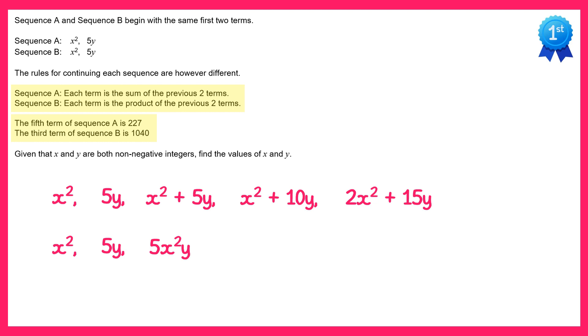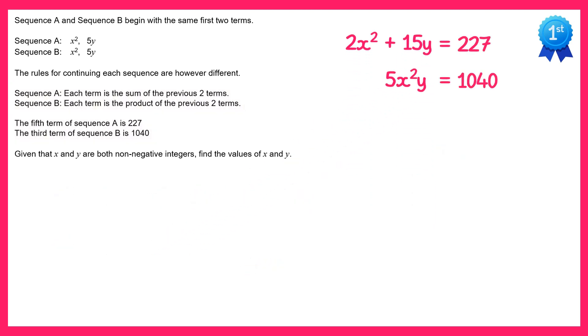Now we know the fifth term of the first sequence is 227, so this one here is equal to 227, and the third term of the second sequence is equal to 1040. This gives us two equations: 2x squared plus 15y equals 227 and 5x squared y equals 1040.